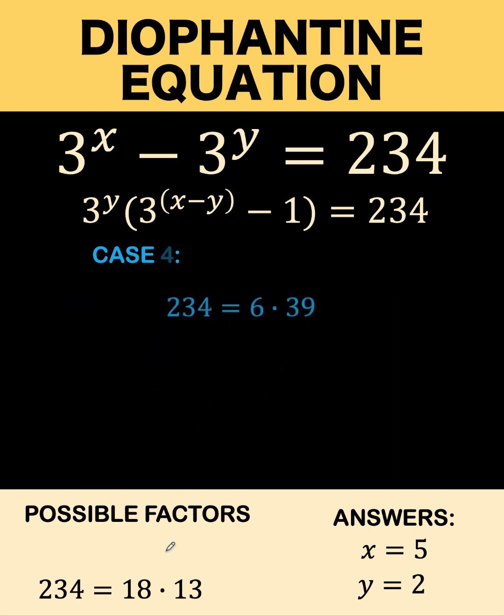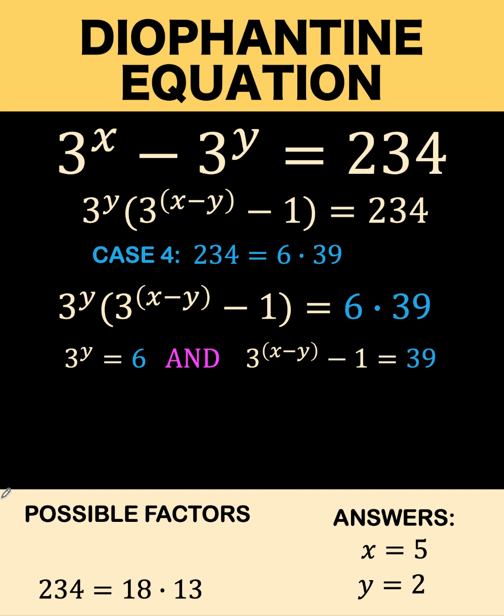So here is the fourth case. Do the same procedure. The first factor equated to 6, the second equated to 39. Then check what are the integer values for x and y. So from here, it's clear that y cannot be an integer because 3 to the first is 3, 3 to the second is 9, but what we have here is 6. So the y value here must be between 1 and 2. So again, this is not an acceptable case.